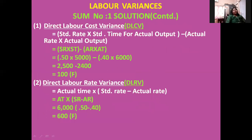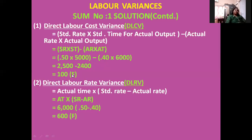The labor cost variance formula compares standard cost with actual cost. Standard cost is standard rate multiplied by standard time for actual output; actual cost is actual rate multiplied by actual time. So: 55 into 5,000 minus 0.40 into 6,000 gives 2,500 minus 2,400 equals 100. Since 2,500 is more than 2,400, the difference of 100 is favorable.